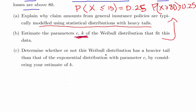And determine whether or not this Weibull distribution has a heavier tail compared to the exponential distribution with parameter C which is 1 over lambda by considering your estimate of K. So essentially how does the Weibull and the exponential distribution relate to each other when you consider the relevance of the K parameter.